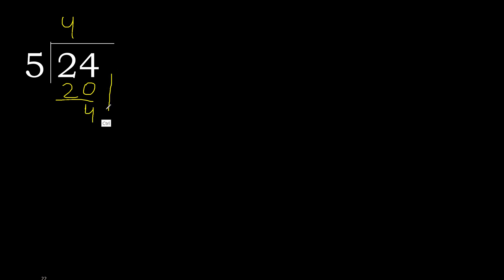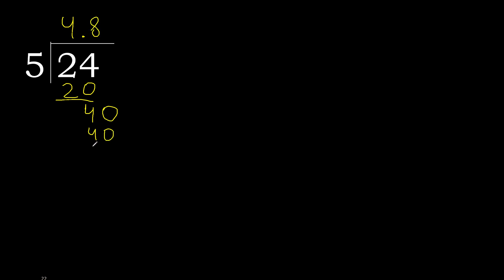Next, that is not a number, therefore always complete with 0 here, with a point. 0 point, ok. 40. 5 multiplied by 8 is 40. 40 minus 40 is 0. Therefore, finish it.